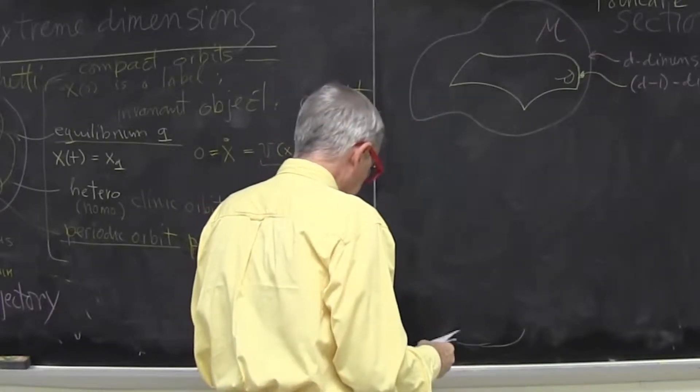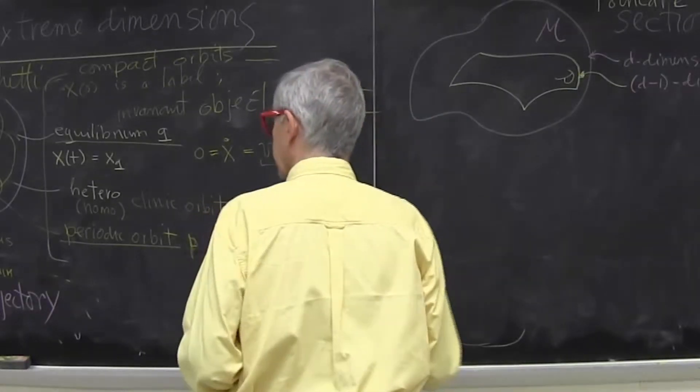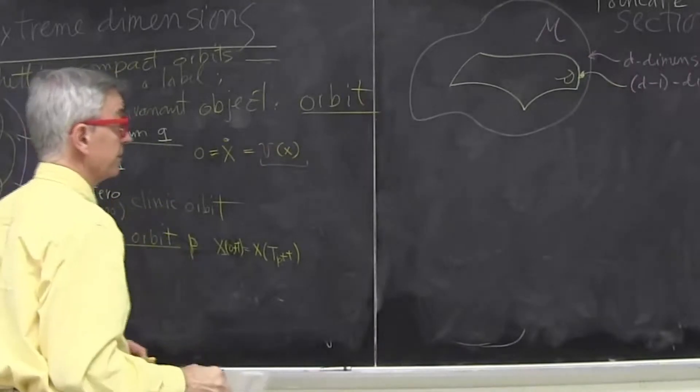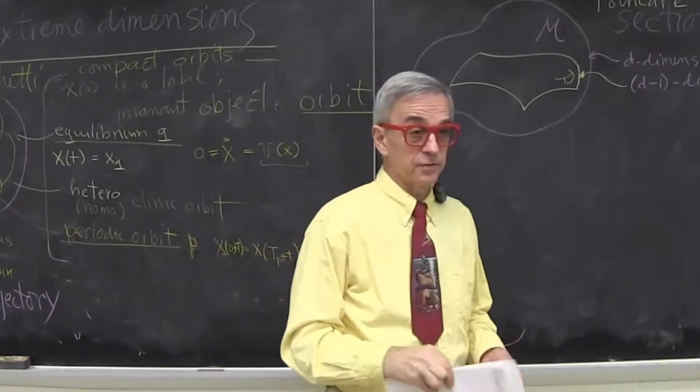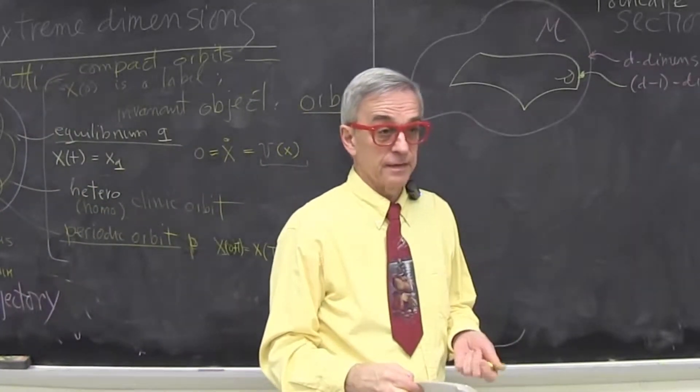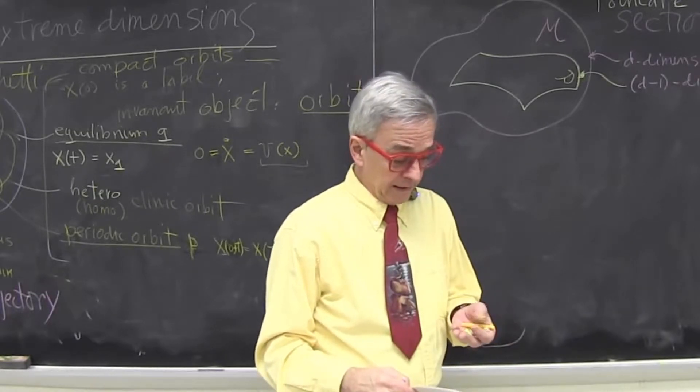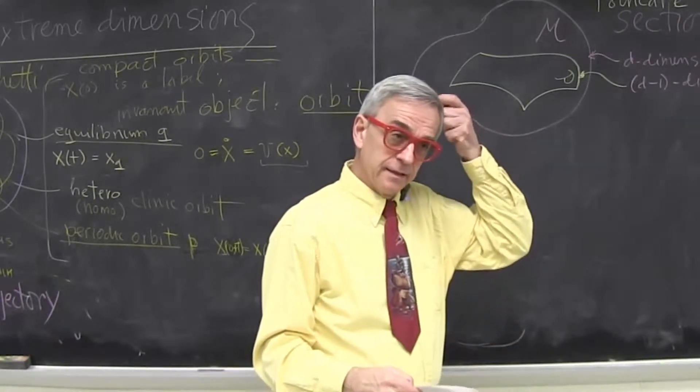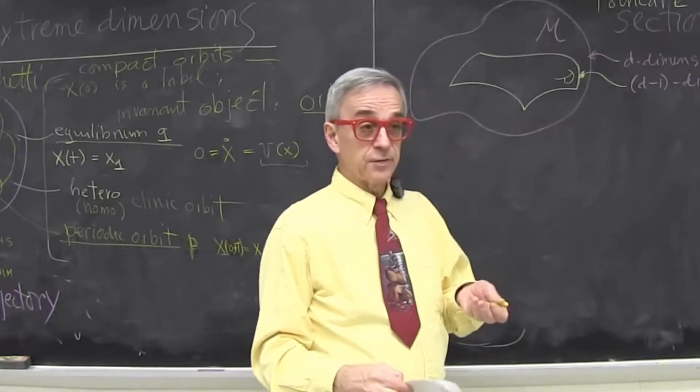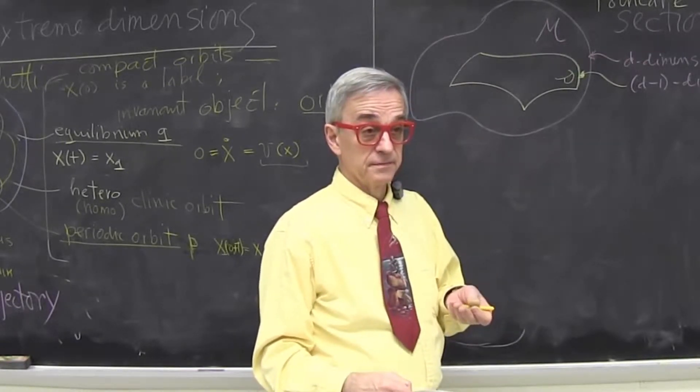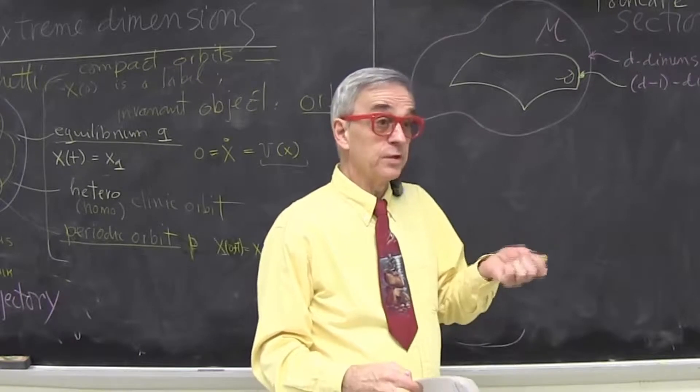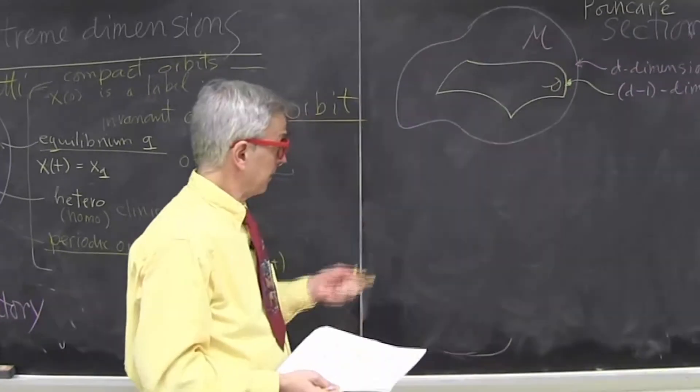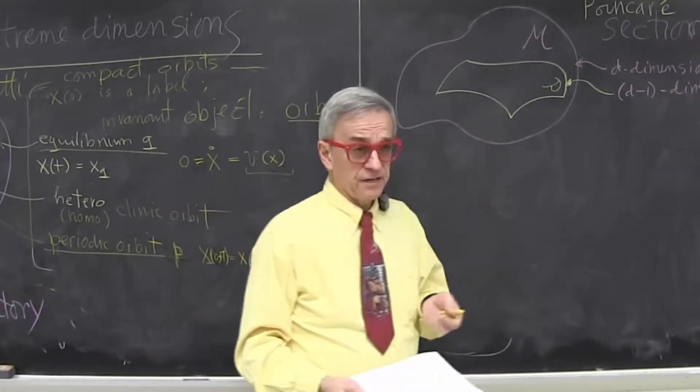And the horrible truth about Poincaré section is that nobody tells you how to choose a Poincaré section. There is no rule. You're kind of accepted already that you're writing equations in coordinates. Coordinates are arbitrary.